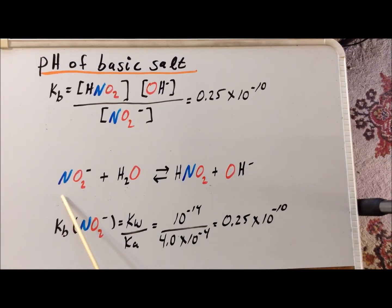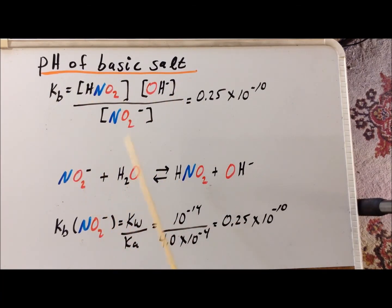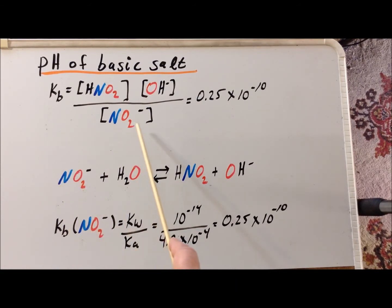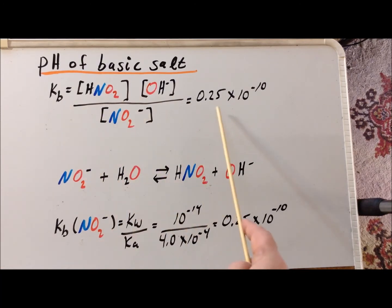We remind ourselves of the reaction of nitrite ion acting as the base, and then we write our expression for the Kb, which is going to be the concentration of nitrous acid times the concentration of hydroxide in the numerator, times the concentration of nitrite ion in the denominator. Recall that water being a pure liquid does not enter into the equilibrium constant expression. We set this Kb equal to 0.25 times 10 to the minus 10.